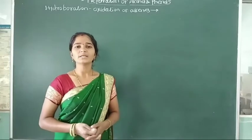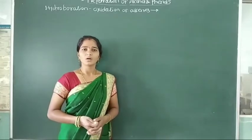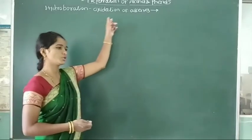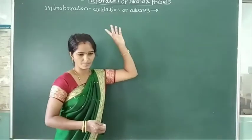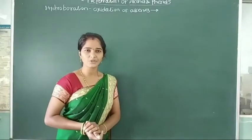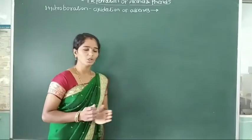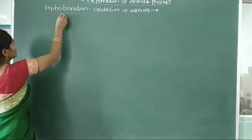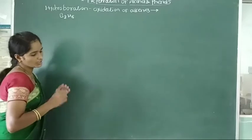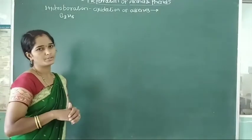Today's lecture we are going to study about preparation of alcohol from hydroboration-oxidation of alkenes. In this hydroboration-oxidation reaction, here is diborane, that is B2H6, and the oxidation reaction takes place in one reaction to give formation of alcohols.